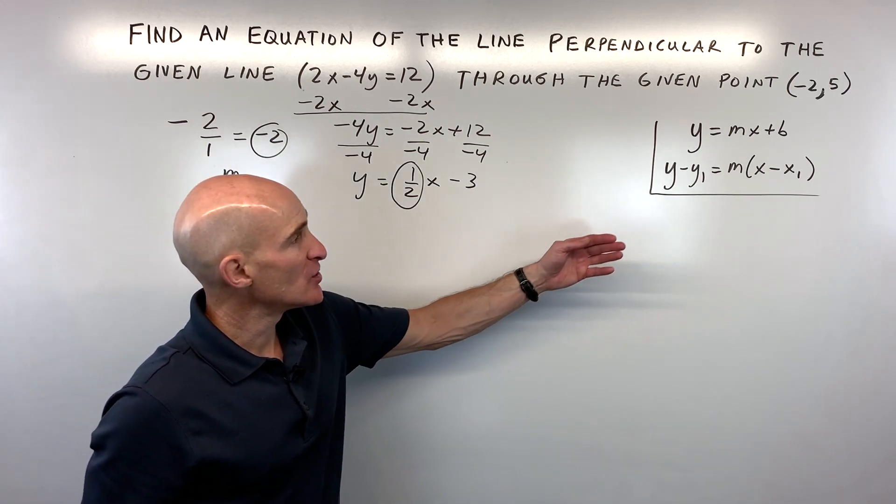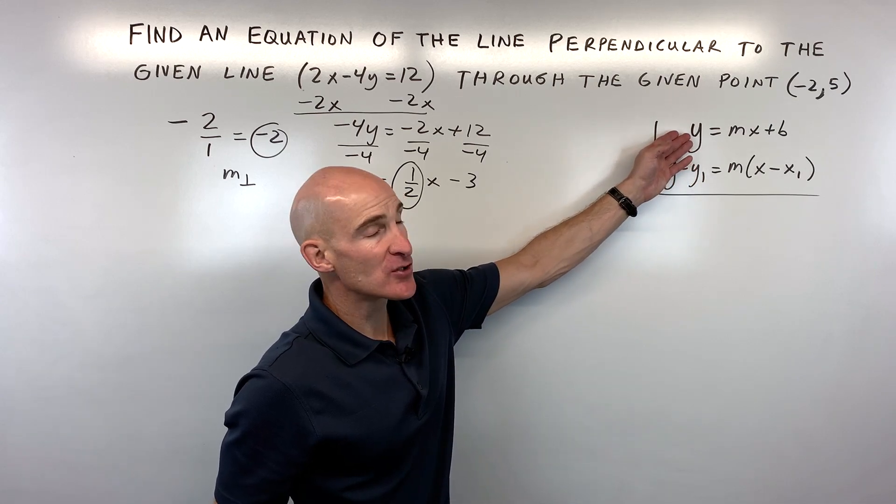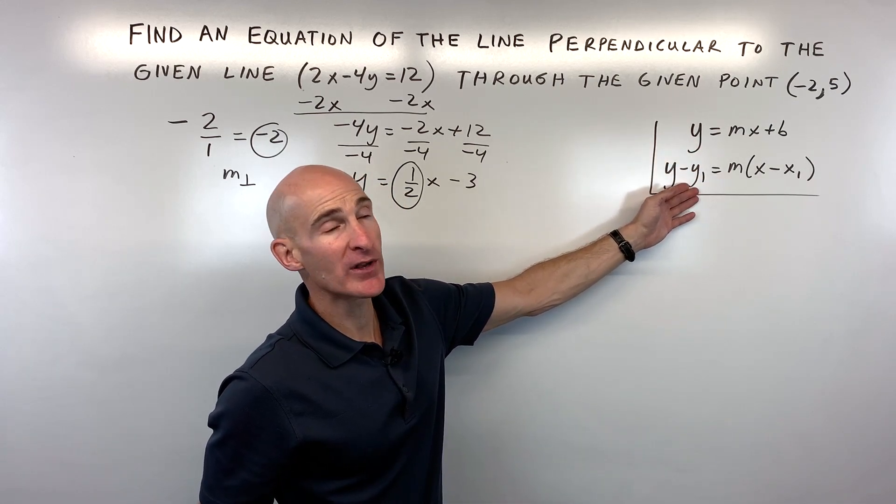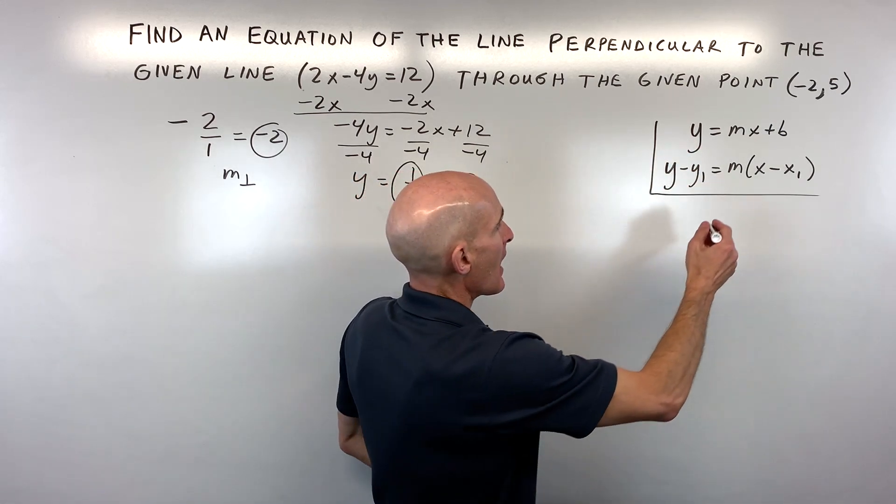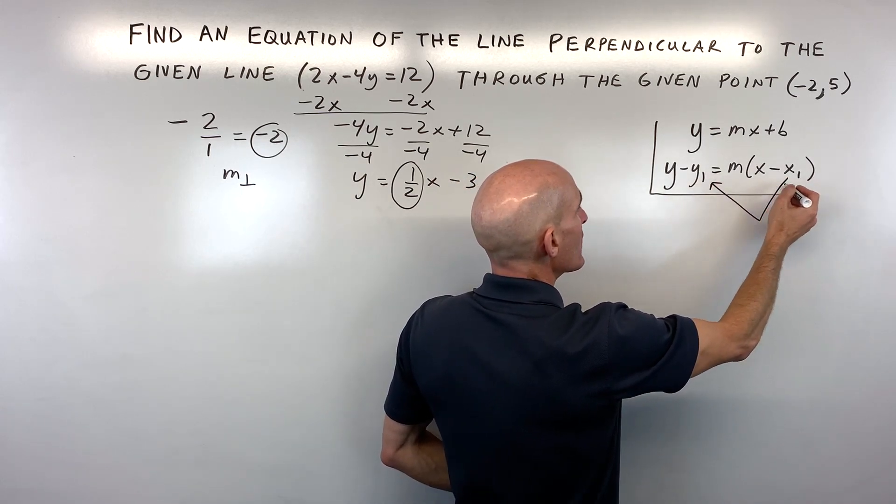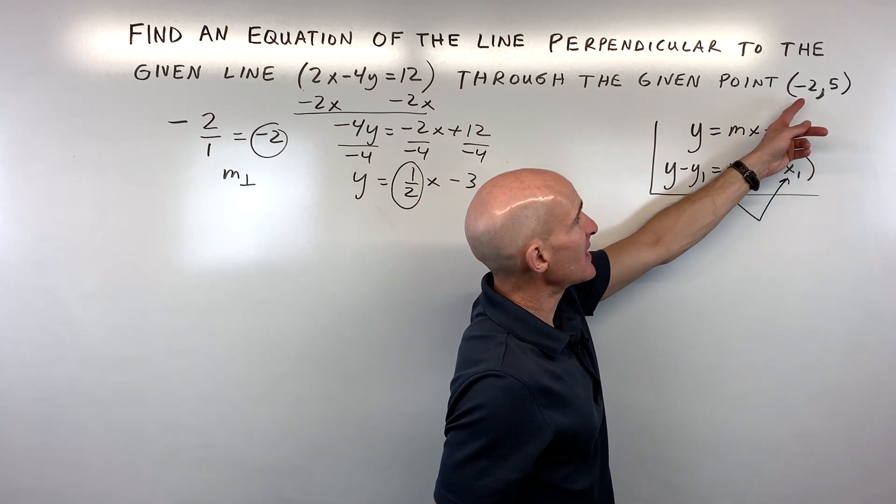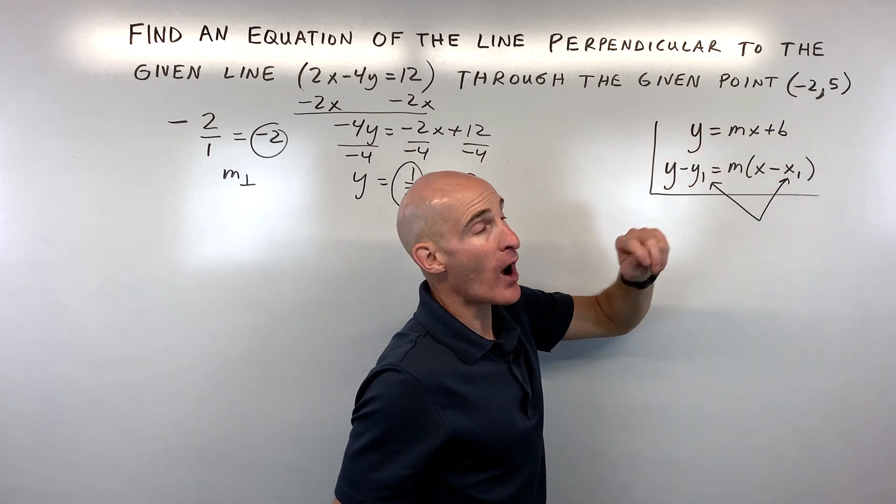Now we can do this two ways. We can use the point-slope form or the slope-intercept form. Let's start with the point-slope form. x1, y1 represents the point that the line goes through. In this case, this is our x1 and this is our y1.